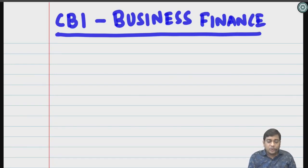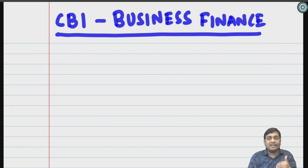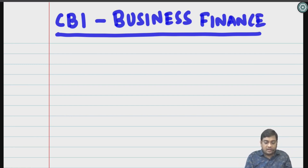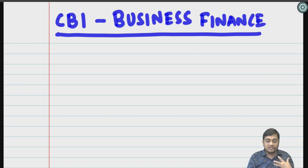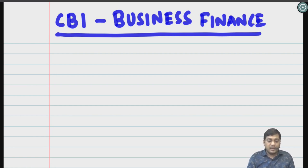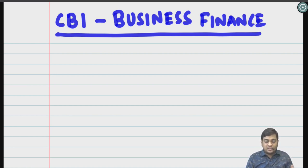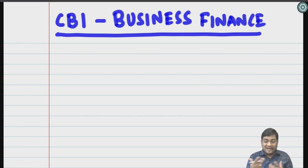Good morning students. Today we are going to study CB1 Business Finance. Basically, for an actuarial student from a science background or economics studying B.Sc. in economics, they may not have much knowledge about business accounting and business finance. So this particular paper will help you understand the basic accounting features, how to control the finance of a company, and how to find sources through which finance can be raised.